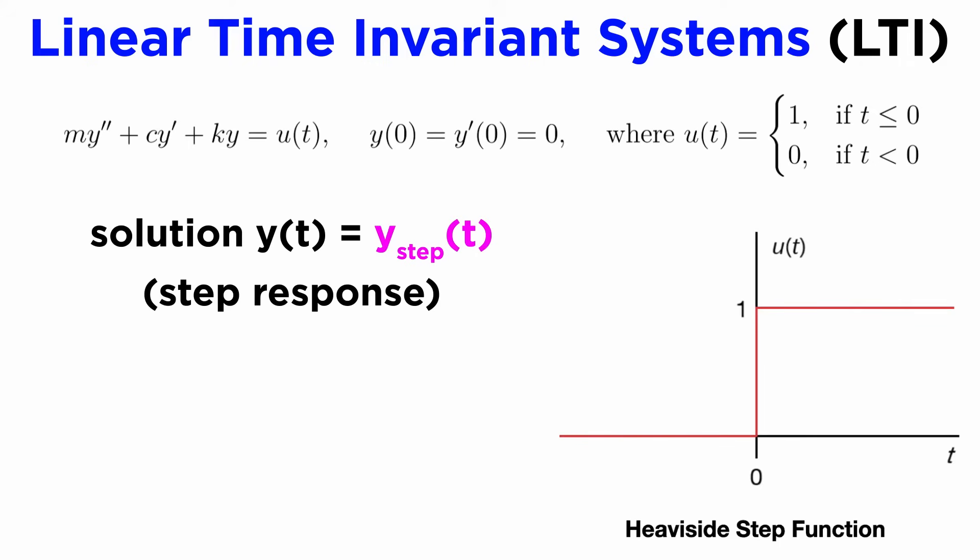For any system, the step response is the output we get if we use the Heaviside step function as the input. As a reminder, the Heaviside step function is zero for all negative time, and suddenly jumps to one for all positive time. In our mechanical vibrations example, this is like turning on a constant unit external force at time t equals zero. We commonly use the symbol U(t) to denote the Heaviside step input and y_step(t) for the step response.